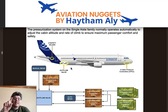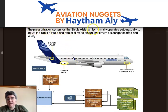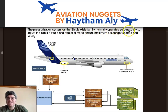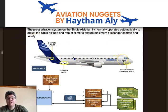The pressurization system on the single aisle family normally operates automatically. We have two automatic systems: system one with CPC1 and motor one, and system two with CPC2 and motor two. The system adjusts cabin altitude and rate of climb automatically to ensure maximum passenger comfort, safety, and normal breathing.